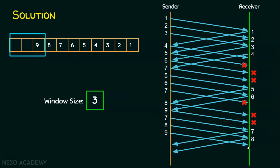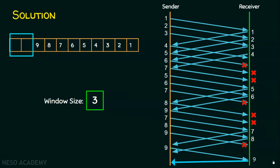The receiver must acknowledge packet 9, but this is the 15th packet transmitted — and every fifth packet is lost. So the 15th transmission is lost. The sender retransmits packet 9 alone (the 16th transmission). The receiver has no other packets in its buffer, receives packet 9 successfully, and sends acknowledgement for packet 9. All 9 packets have now been transmitted successfully. We count the total: 16 transmissions.